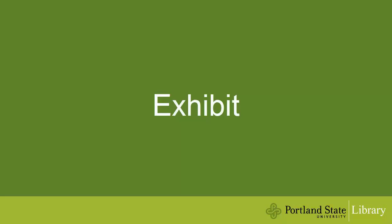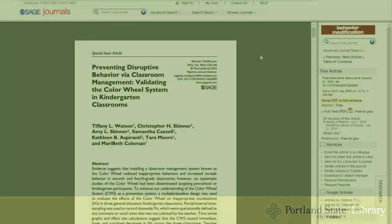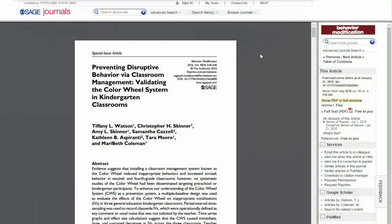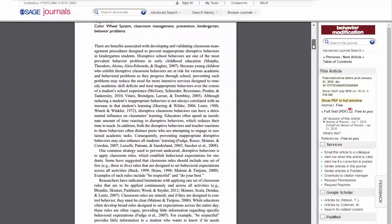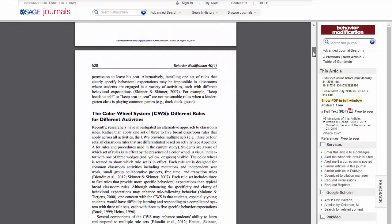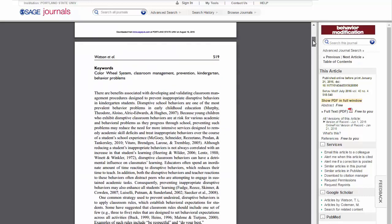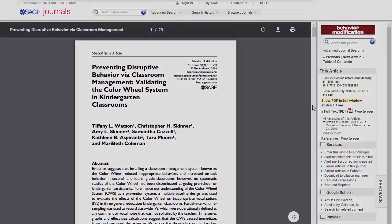E stands for exhibit. An exhibit is a direct source of information that can be used as evidence to support your position. These are sources that you'll analyze or interpret, and may consist of raw data, images, studies, or other materials — often primary sources — which provide a focal point for your paper.